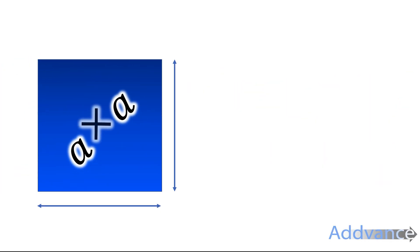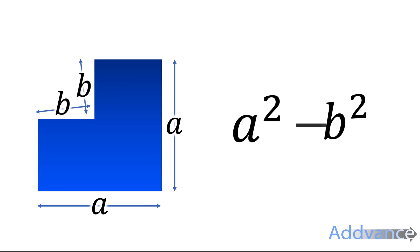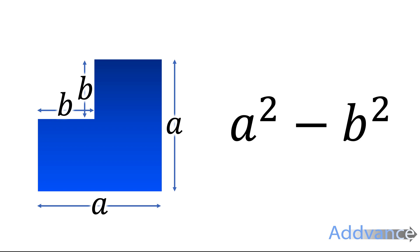Here we have a square that has an area of a squared. We have another square here that has an area of b squared. If we take these two areas from each other we will get a squared minus b squared. Look at the top length of this shape here. That will be the full length a minus b.